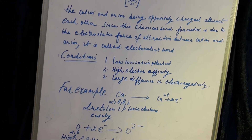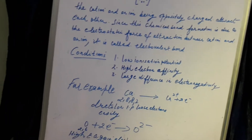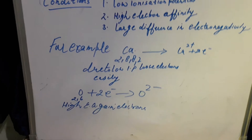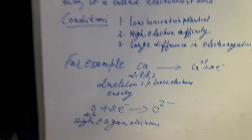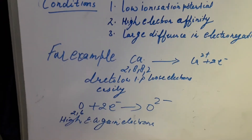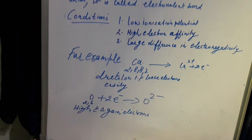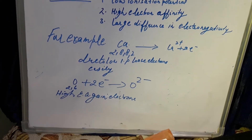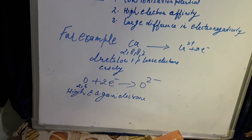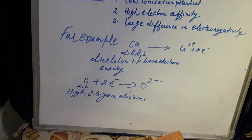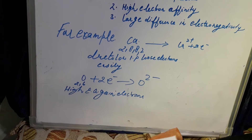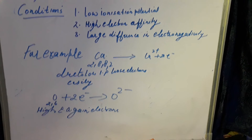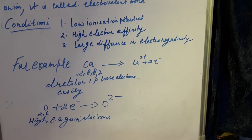Now we will discuss an example in detail — how calcium oxide is formed. The electronic configuration of calcium is 2, 8, 8, 2. In order to obtain a stable electronic configuration of the nearest noble gas, which is argon, it has to lose two electrons. Due to its low ionization potential, it can easily lose two electrons to form the cation calcium 2 plus.